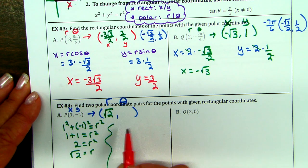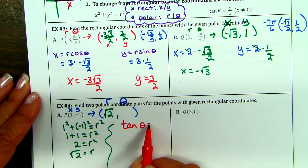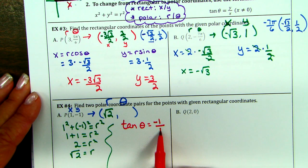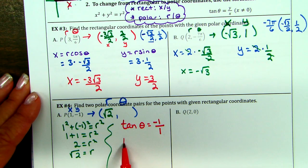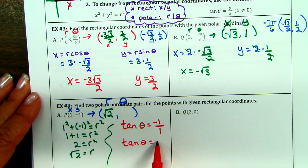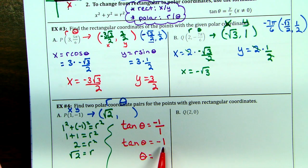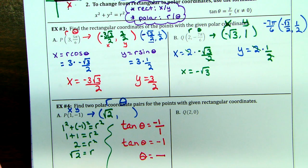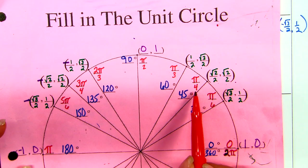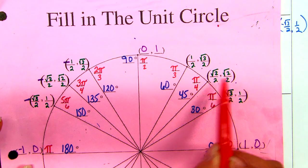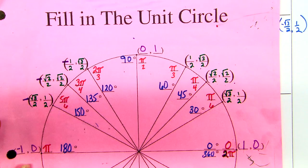Then for tan: it's y over x. Given to us: negative 1 over 1 is negative 1. We're trying to find theta — where on the unit circle is tan equal to negative 1? The denominators of 4 give tan of 1 or negative 1 because square root of 2 over 2 divided by square root of 2 over 2 cancels to 1. There are two places where it's negative: quadrant 2 or quadrant 4.